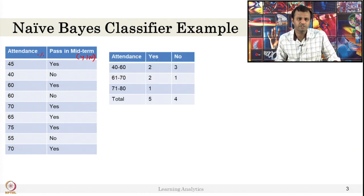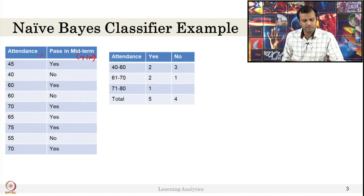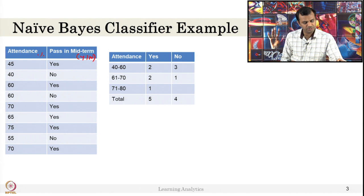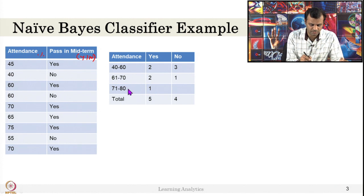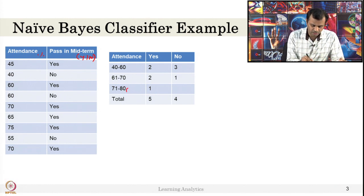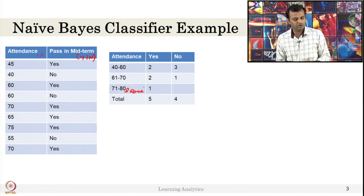From this table we can construct a frequency table. We make bins out of the values: 40 to 60, 61 to 70, and 71 and above. I have 3 bins here.